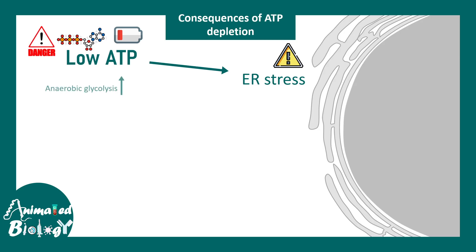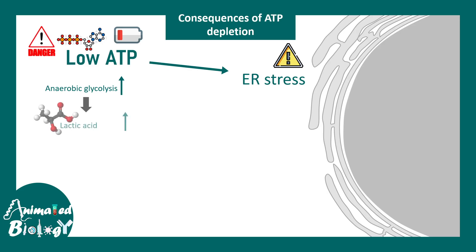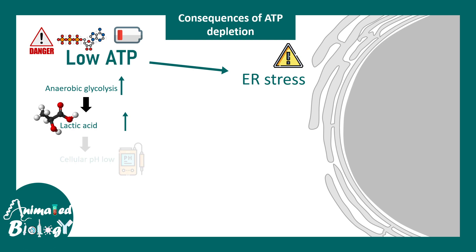Low ATP also triggers anaerobic glycolysis as a backup power generator for ATP production. Some ATP is produced, but side by side lactic acid is produced. Being acidic, lactic acid changes the pH inside the cell, and many enzymes require an optimal pH for their functioning — so they stop functioning as well.